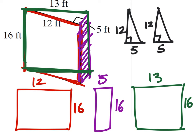We did already figure out the area of both of these triangles, and found that they are both 30 square feet in this case. But let's find the area of each of these rectangles. 12 by 16 is 192 square feet, 5 by 16 is 80 square feet. And then we've got this green one, a 13 by 16 square foot, which is 208.